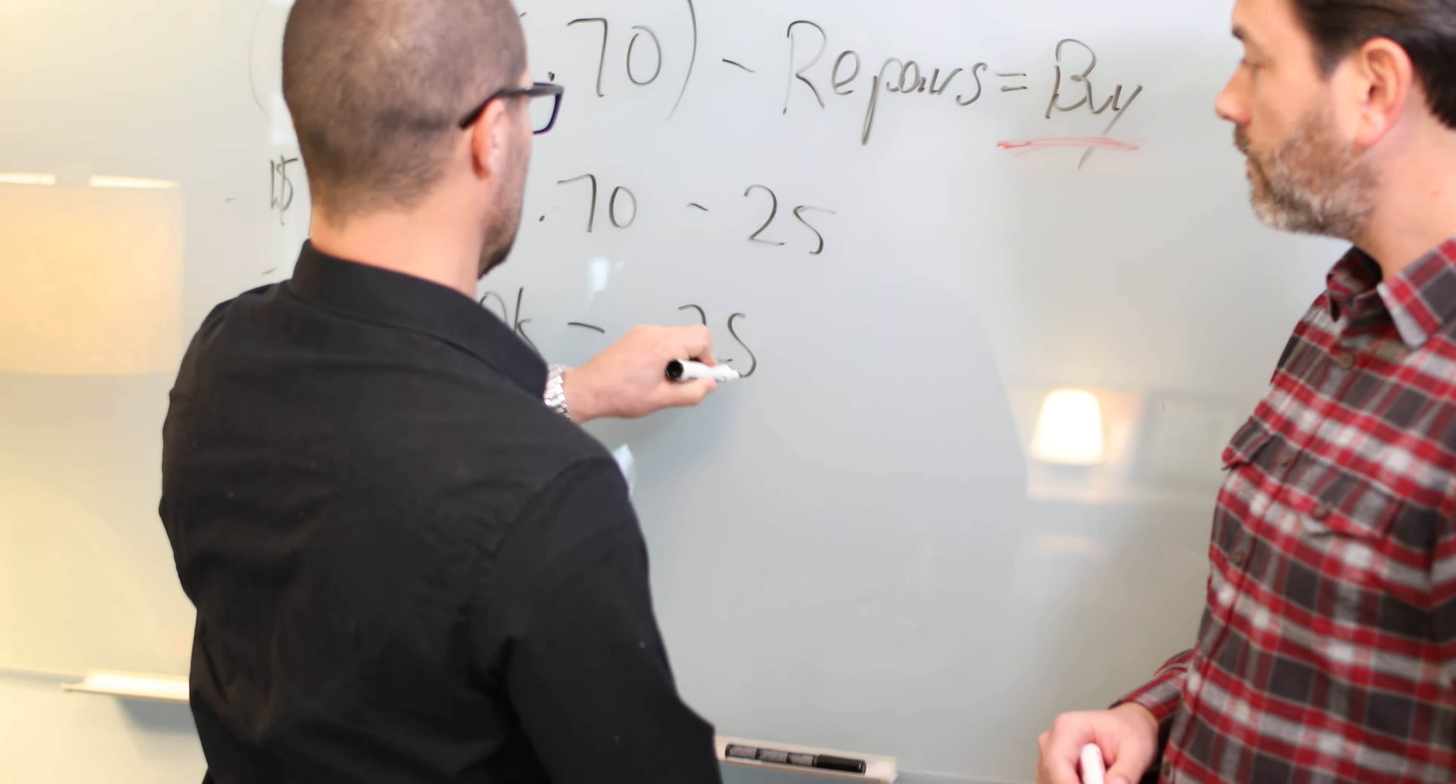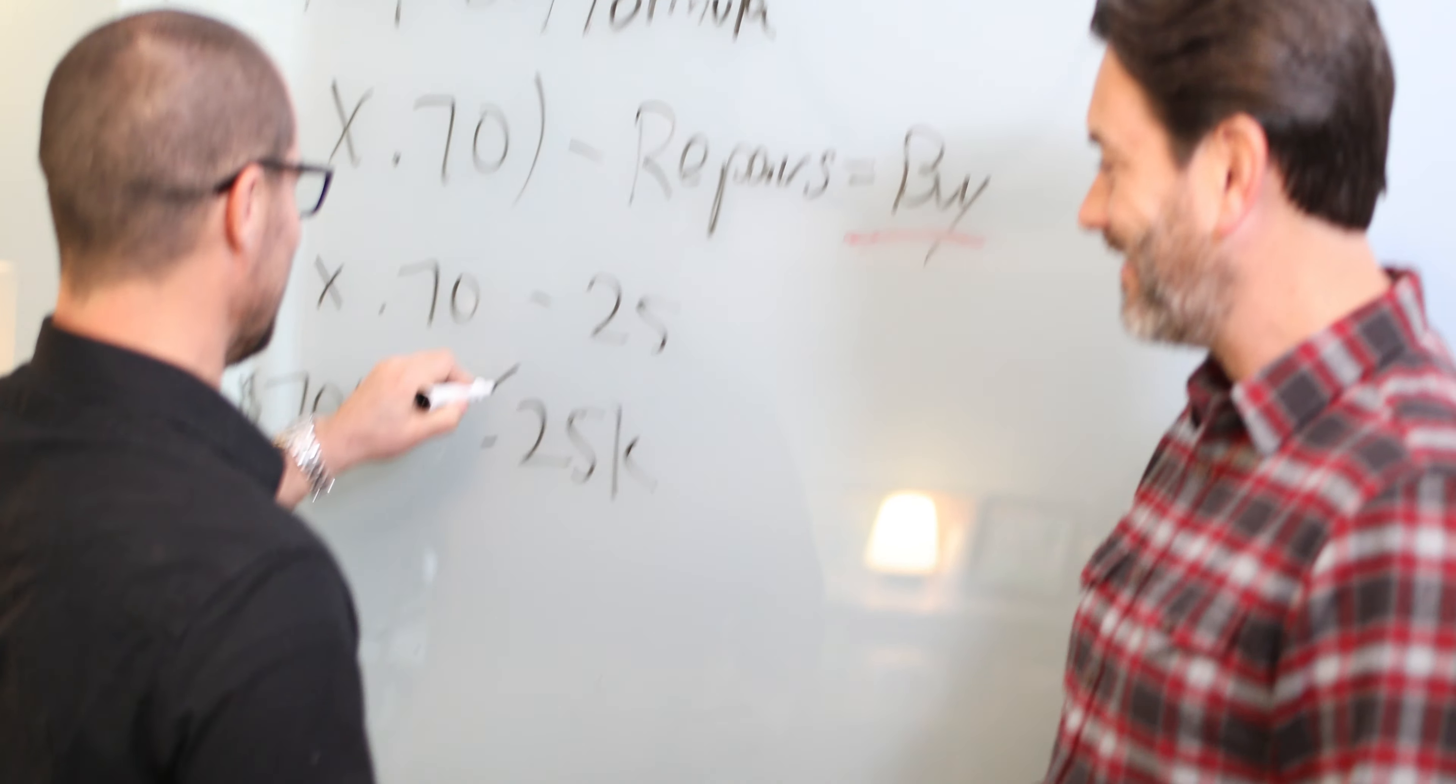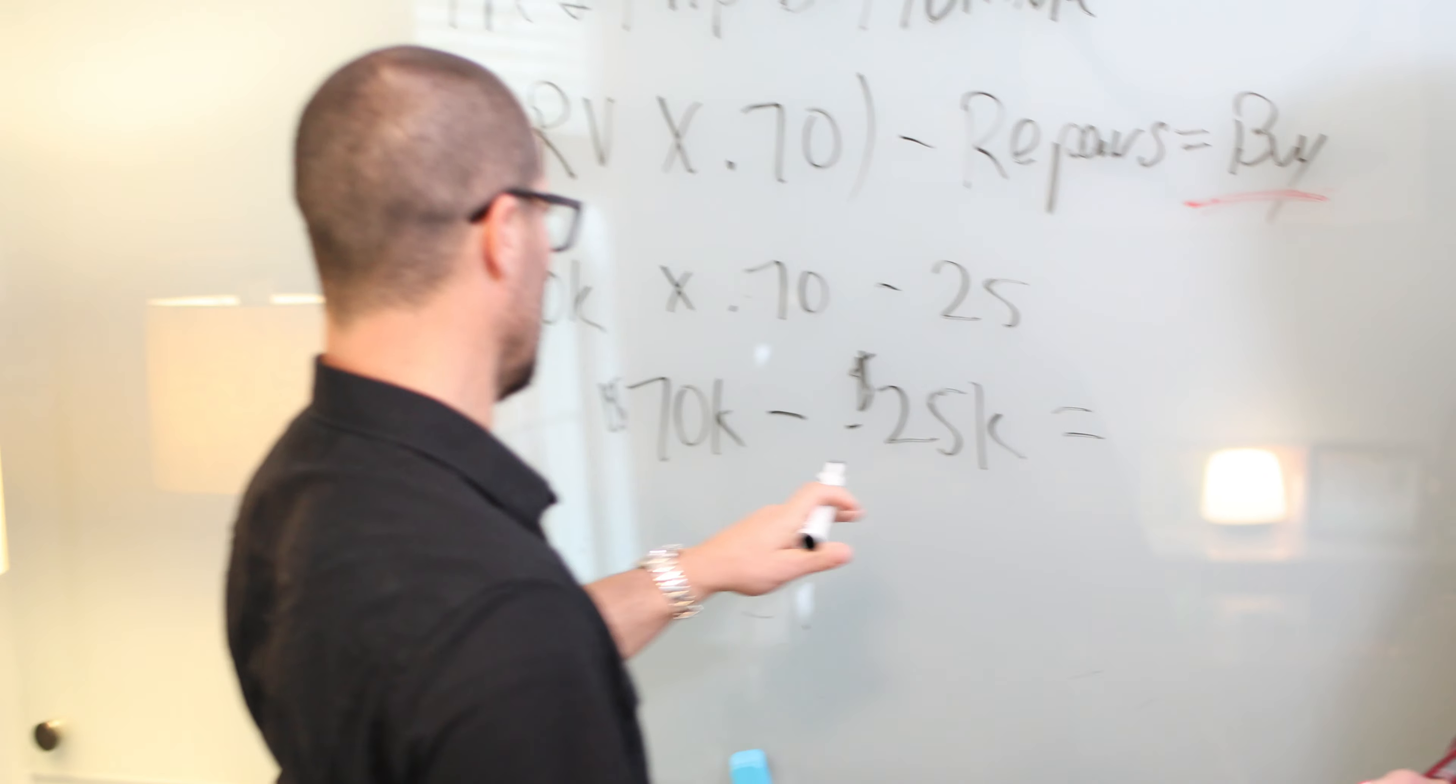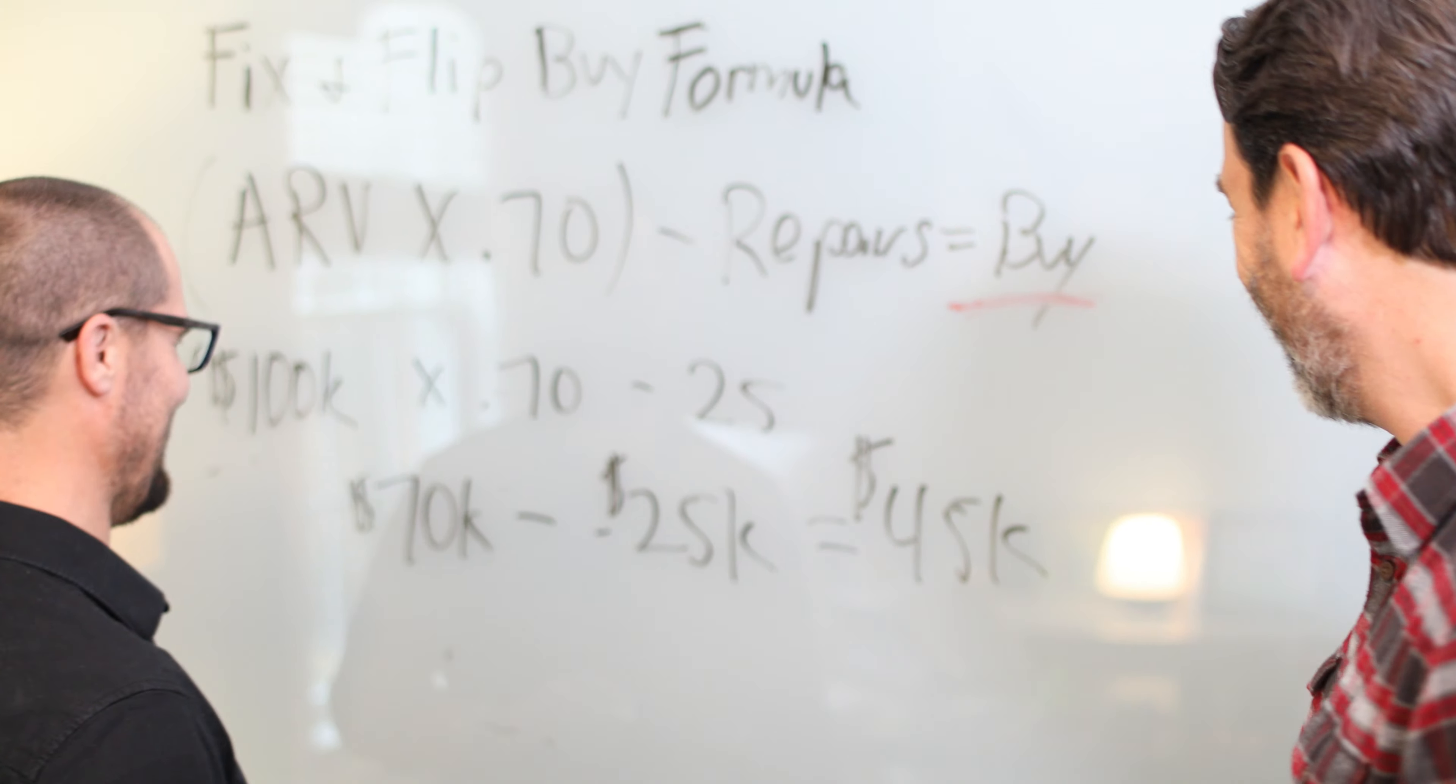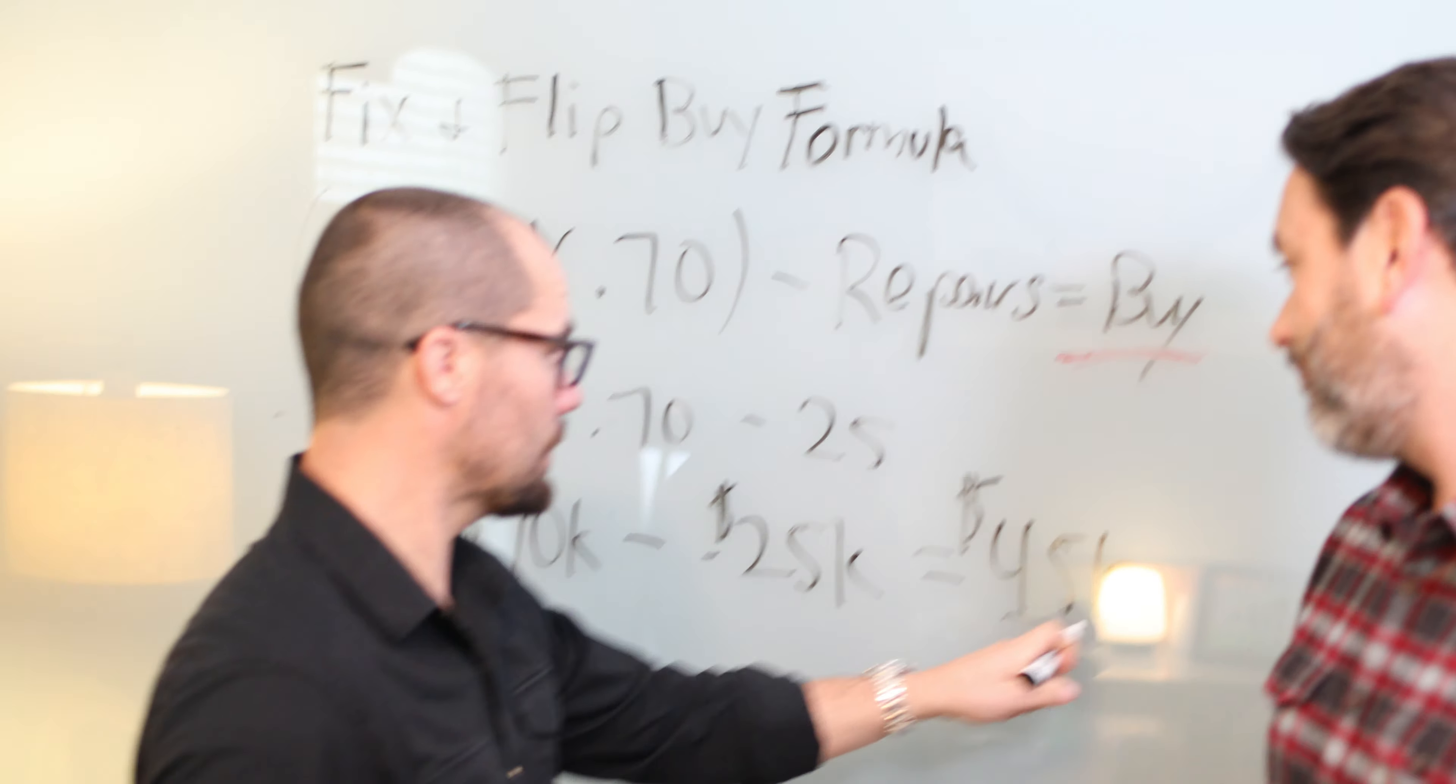Well, now we have to figure out our repairs. Let's say the repairs are $25,000. And this is like fifth grade math we're doing right now, right? So then we would subtract our $25,000 and then that would get to our buy price. So that would get us to our, what, $45,000? Can we get a calculator in here? $45,000. There you go.